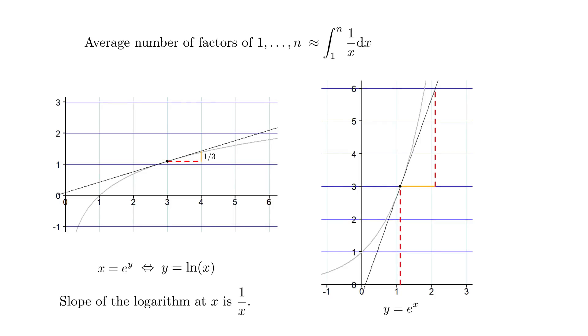Picking off where we left the integral, we now know that it equals log of n minus log of 1. Looking at the graph of the logarithm, we see that log 1 equals 0. So we can omit that term in the answer. Therefore, we have proven, the numbers from 1 to n have on average log n many factors, where the percent error tends to 0 as n tends to infinity.